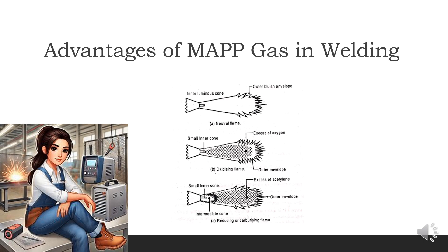MAP gas (methyl acetylene propadiene propane) is an alternative fuel that offers a balance between cost, safety, and performance. It burns at a slightly lower temperature than acetylene, around 5,300 degrees Fahrenheit (2,927 degrees Celsius), but still provides enough heat for many welding and cutting applications. Advantages of MAP gas include increased safety, as it is more stable than acetylene and does not require special storage conditions. It is also lower cost, generally more affordable and readily available, and provides longer cylinder life with more burn time per cylinder compared to acetylene.